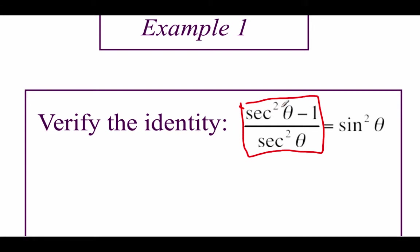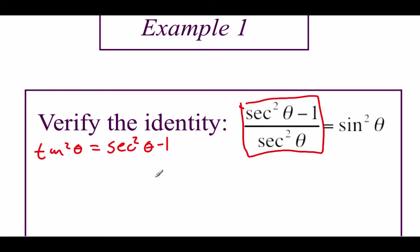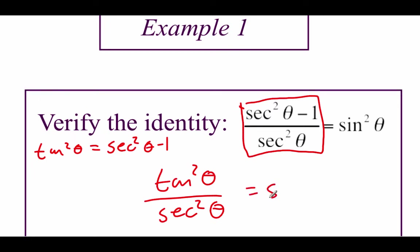We're going to try to use some of our trig identities to simplify this down. Looking on top, we've got a Pythagorean identity that says tangent squared of theta is the same as secant squared of theta minus one. So I'm going to replace the secant squared of theta minus one on top with our tangent squared. So then we've got tangent squared of theta over secant squared of theta equals sine squared of theta.